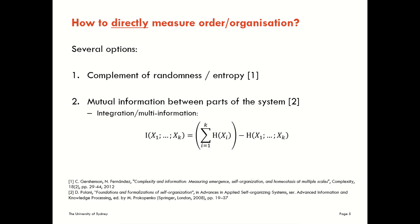Another option then is looking at mutual information between parts of the system. Polanyi suggested looking at a higher order mutual information — a generalisation of mutual information known as the integration or multi-information, which has been around in information theory for some time. It's a generalisation of mutual information beyond pair-wise. Polanyi suggested this could be used to study self-organisation across the system as a whole. I like this measure of integration in and of itself, though I'm still not 100% convinced it's the right measure for self-organisation in general.